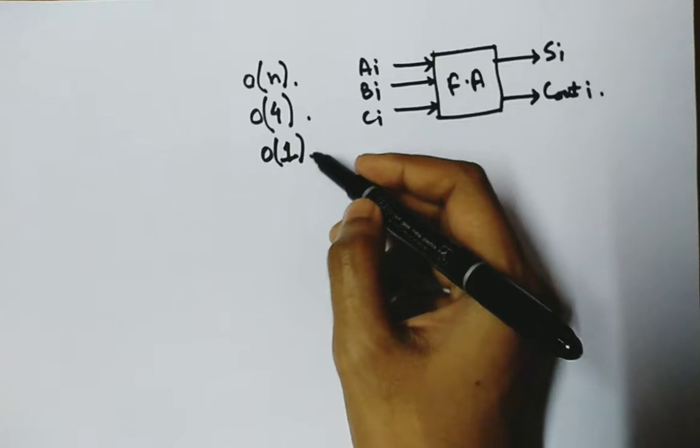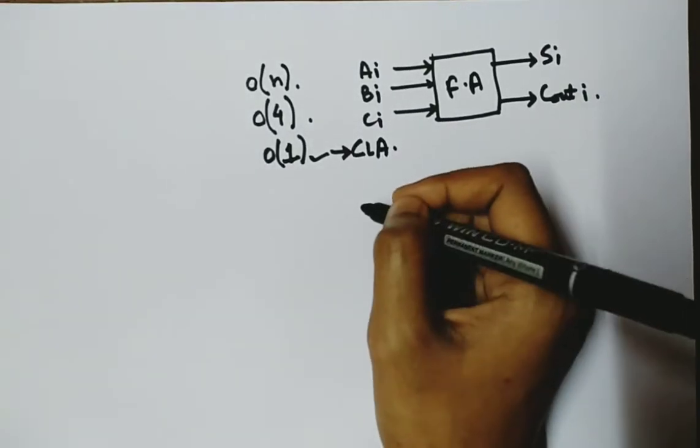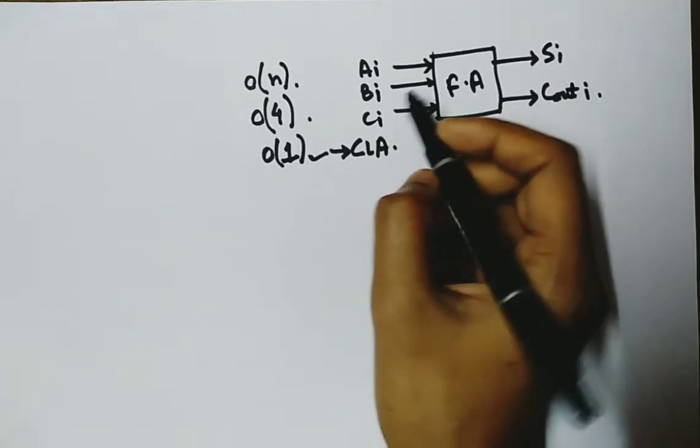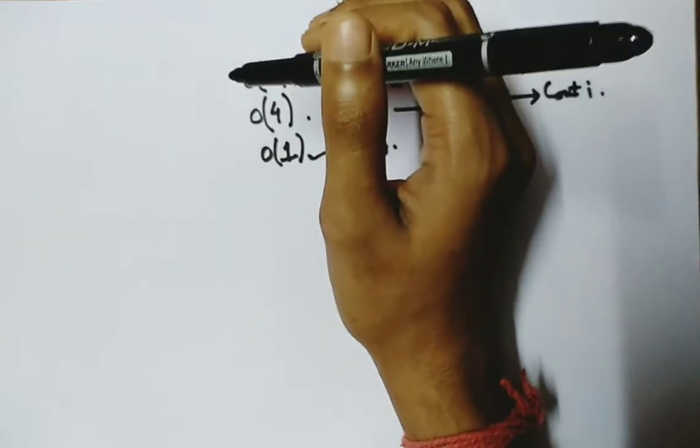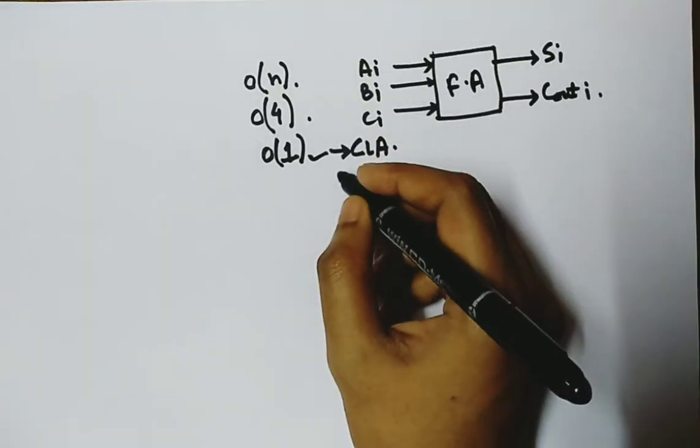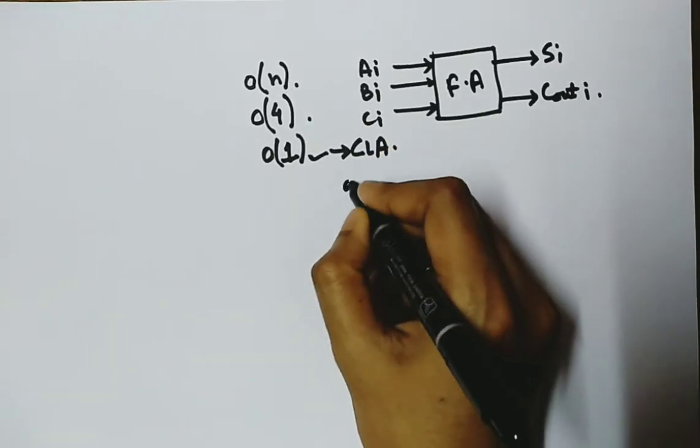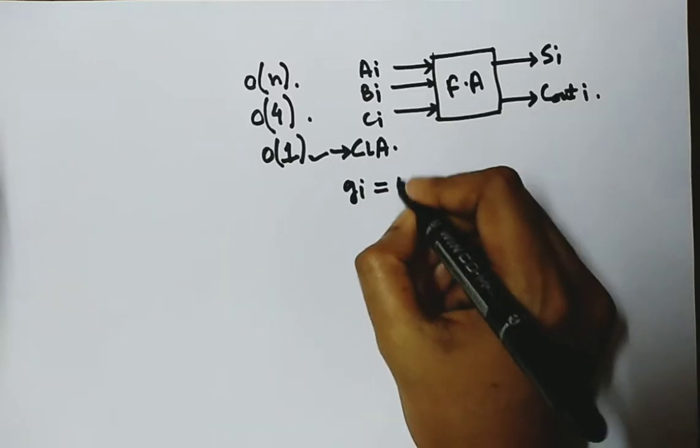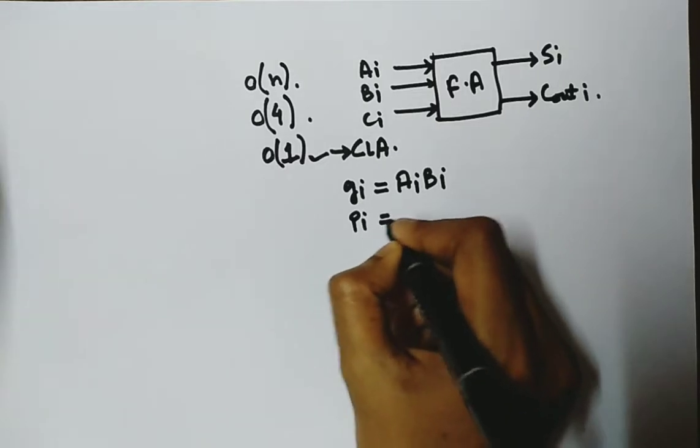Here in carry look-ahead adder, this happens because for a carry look-ahead adder, the carry of all the stages are generated parallely. So we will see how. For that, first we have to consider two functions: this is the generation function and this is the propagation function.